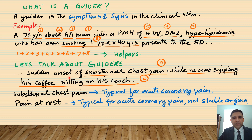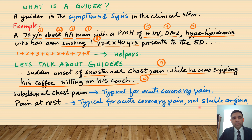They help you get to the right answer, but you cannot get the right answer just with the helpers — you need more assistance. So the question continues: the patient has sudden onset of substernal chest pain while he was sipping his coffee sitting on his couch. These are now guiders. Substernal chest pain is typical for acute coronary pain, and pain at rest is typical for acute coronary syndromes but not typical for stable angina. So number nine and number ten are guiders because they are symptoms guiding you.